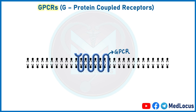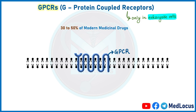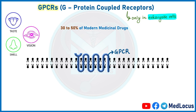GPCRs are G protein-coupled receptors. GPCRs are the largest family of cell surface receptors, found only in eukaryotic cells, not in prokaryotic cells. GPCRs are the target of around 30 to 50% of all modern medicinal drugs. They are very important for taste, vision, and smell, as well as behavior change and proper functioning of the immune system.